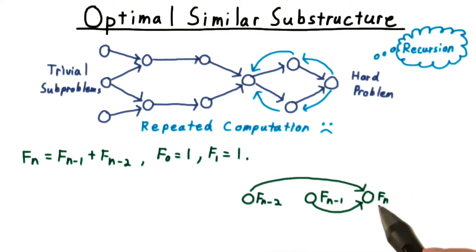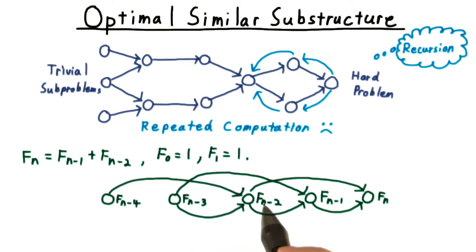This hard problem of computing the nth number in the sequence depends on solving the slightly easier problems of computing the n minus 1th and the n minus 2th elements in the sequence. Figuring out n minus 1 depends on n minus 2 as well as n minus 3. N minus 2 depends on knowing the answer to n minus 3 and n minus 4, and so forth.